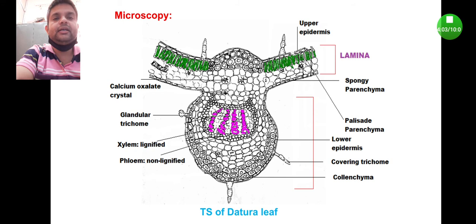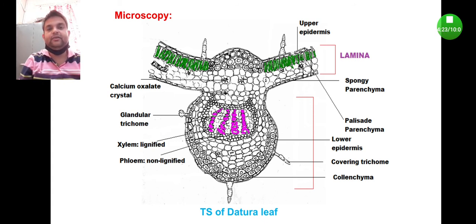These are certain important characteristic features you will observe. Apart from that, at the lower part of the midrib you will find spherical, slightly blackish colored cells which are known as collenchyma. The presence of collenchyma cells is also considered a characteristic feature of the datura leaf.